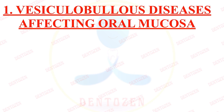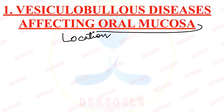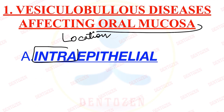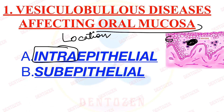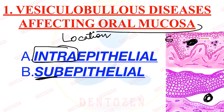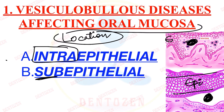The first classification of vesiculobullous diseases of the oral mucosa is based on location — where the blister forms within the oral mucosa epithelium. If the lesion forms inside the epithelium, we call it intraepithelial — 'intra' meaning inside, so the fluid and blister form under the epithelium. If the lesion forms below the epithelium, we call it subepithelial — 'sub' meaning below.